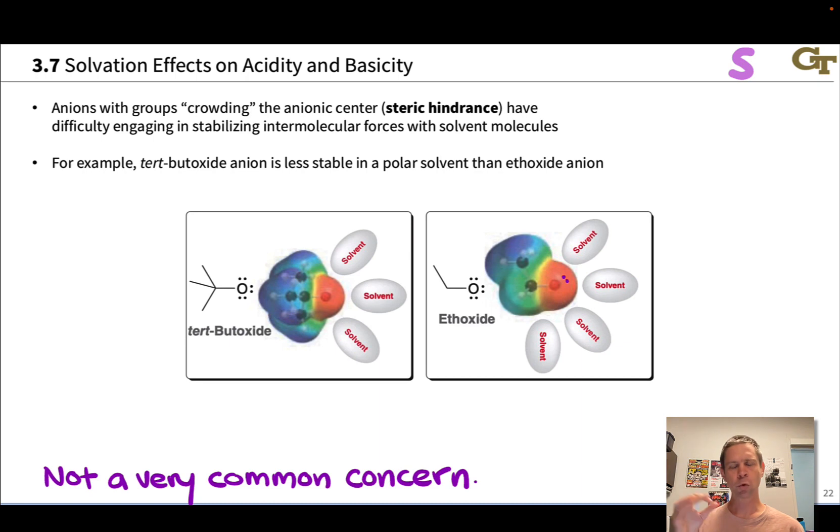And so large, very, what we call bulky groups, can hinder other molecules from getting close to a molecule. For example, here, we see the tert-butoxide anion, one of the most famous bulky molecules in organic chemistry. These three methyl groups are much larger than they appear in the skeletal structure of tert-butoxide.